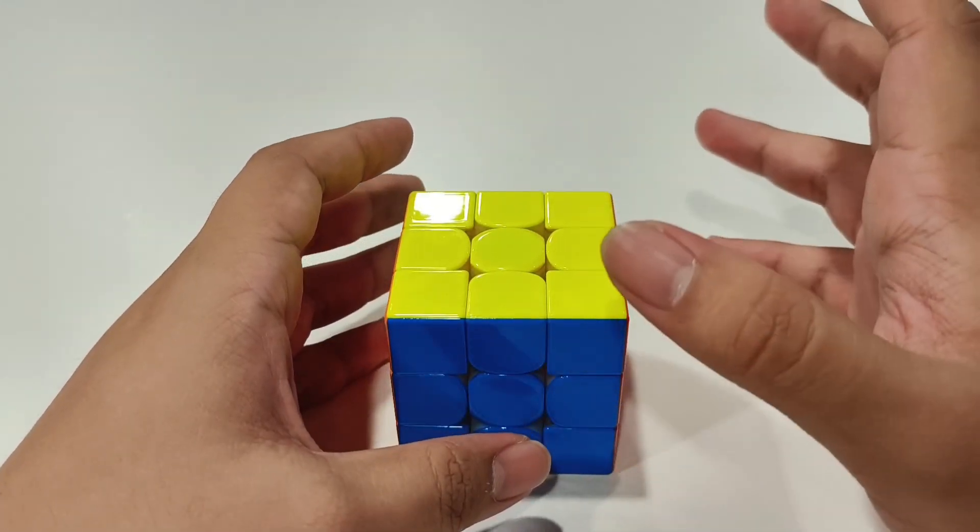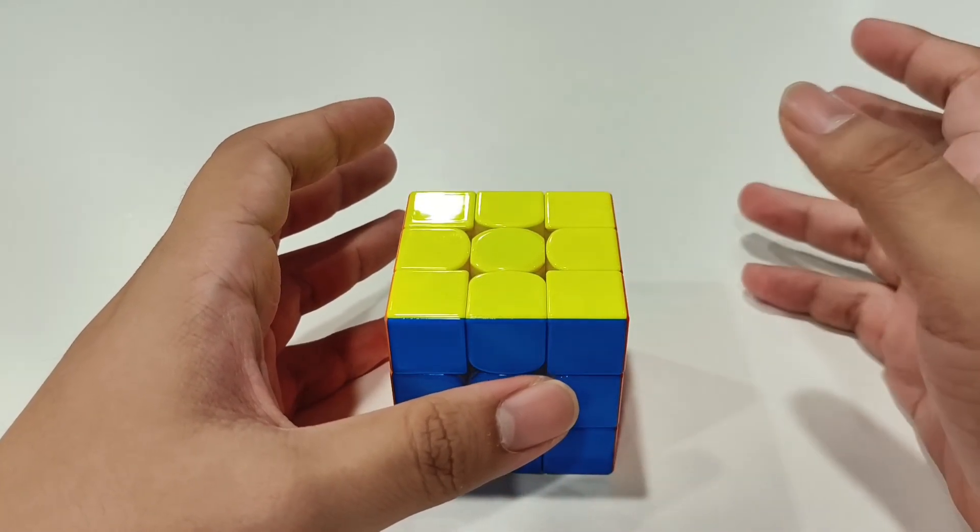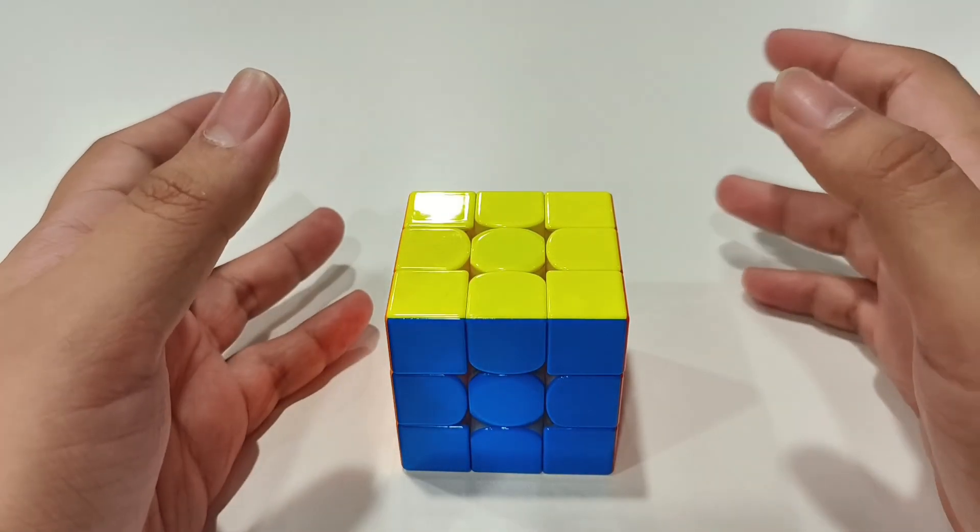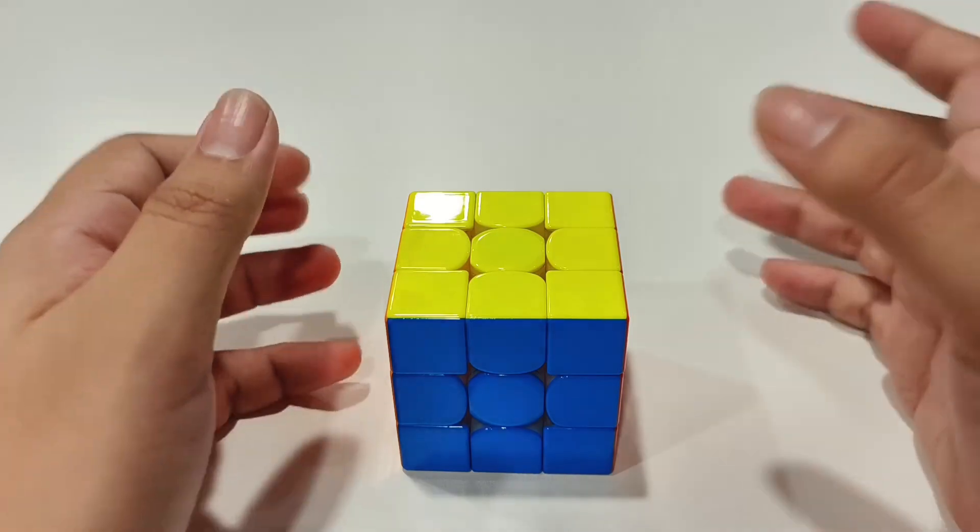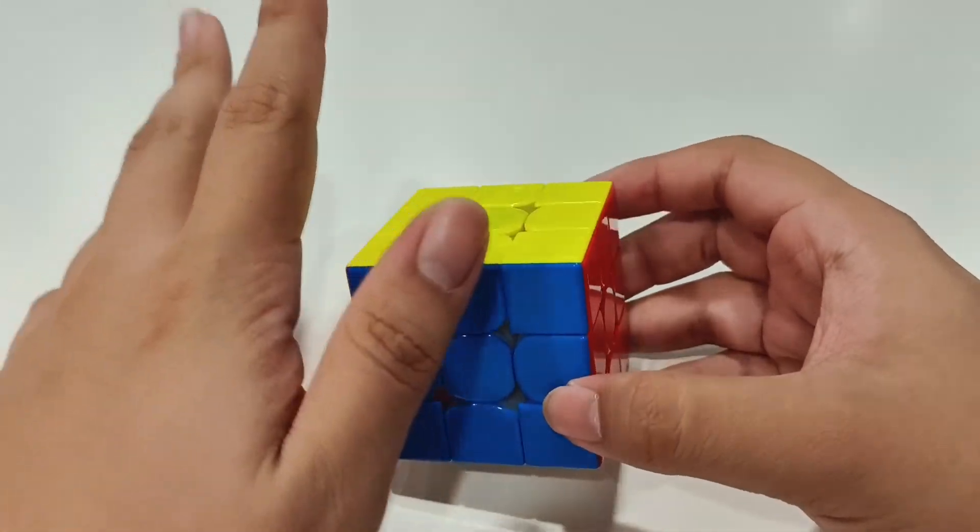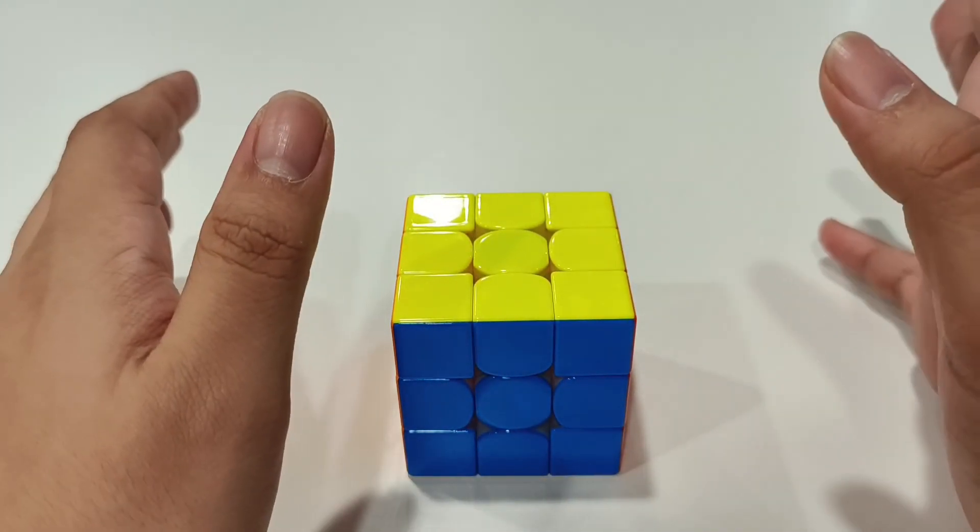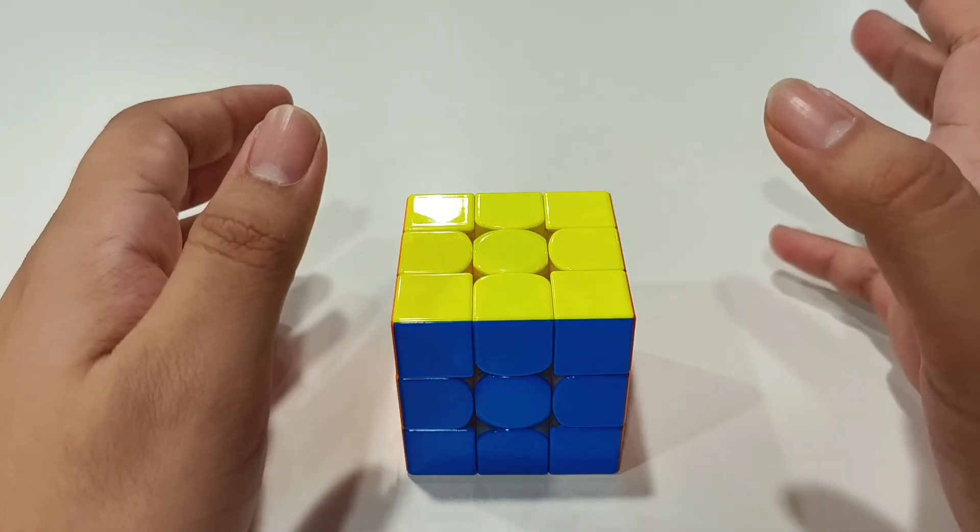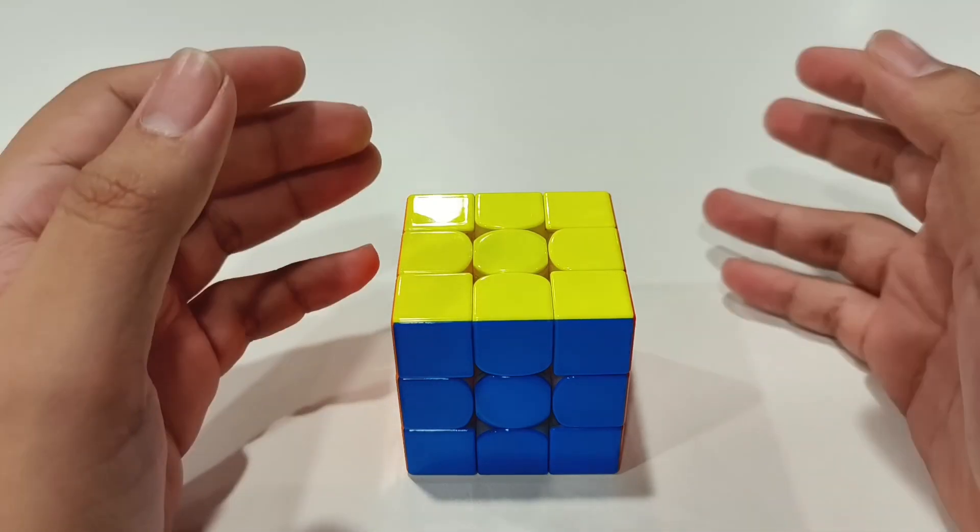So during the solve I actually think that at first I am not sure if I will get a five or a six, but during the solve, like when I start doing second pair, I realize that the solve is going to be really fast, so I tried to turn as accurate as possible because I don't want to get lockups.